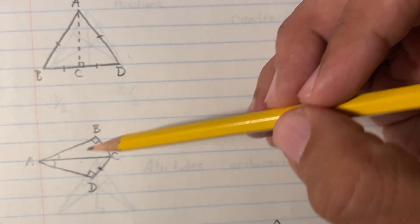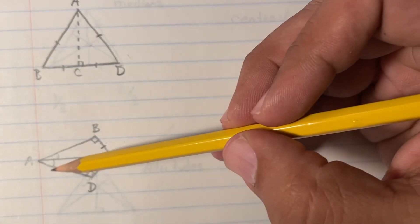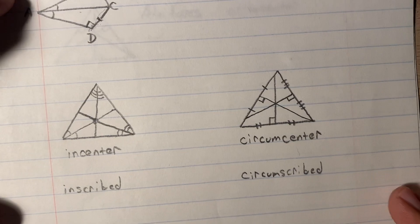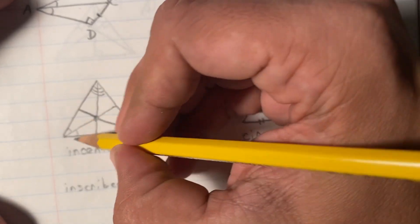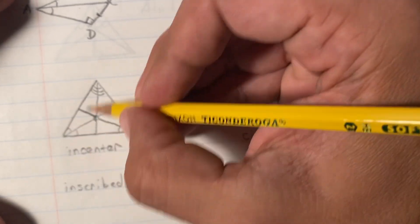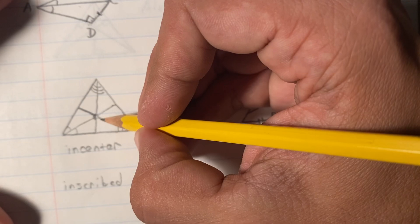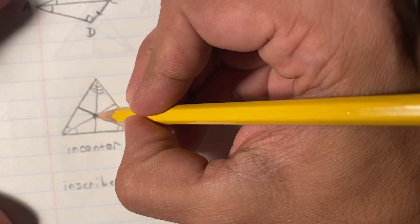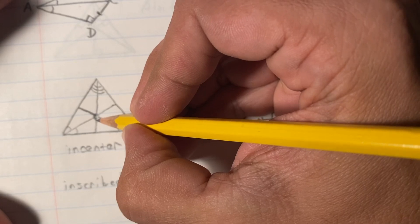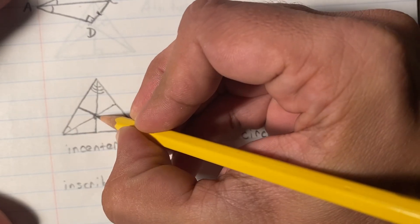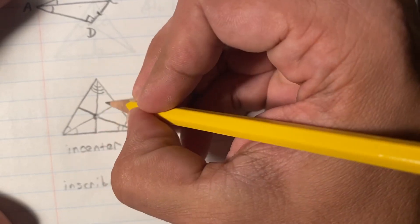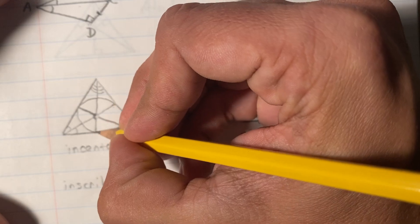You could also do angle-angle-side in this situation. Now let's talk about the incenter. When you find the angle bisectors, they all meet in one place. You only need two angle bisectors because if you find where two of them meet, you automatically know where the third one meets. Where the angle bisectors meet is equidistant from all of the sides — the shortest length from each side is equal, meaning these are all radii of the inscribed circle drawn inside the triangle.